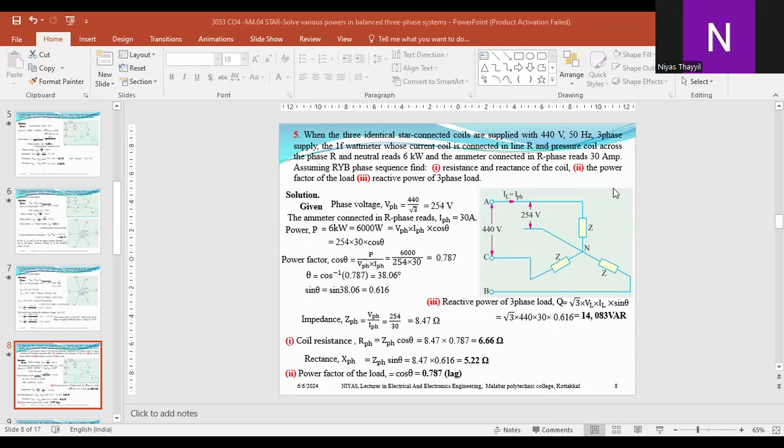A wattmeter whose current coil is connected to R, pressure coil is connected between R and neutral, reads 6 kilowatt, and an ammeter connected in R phase reads 30 Ampere. R, Y, B phase sequence.